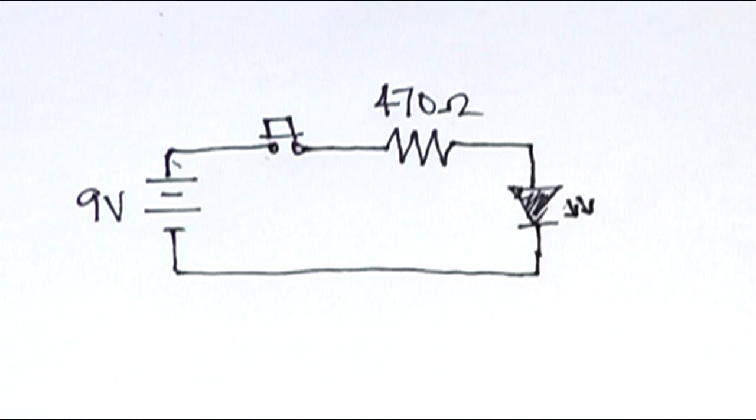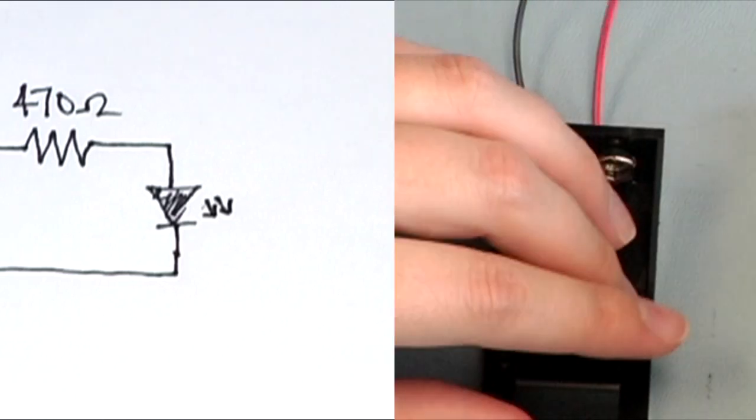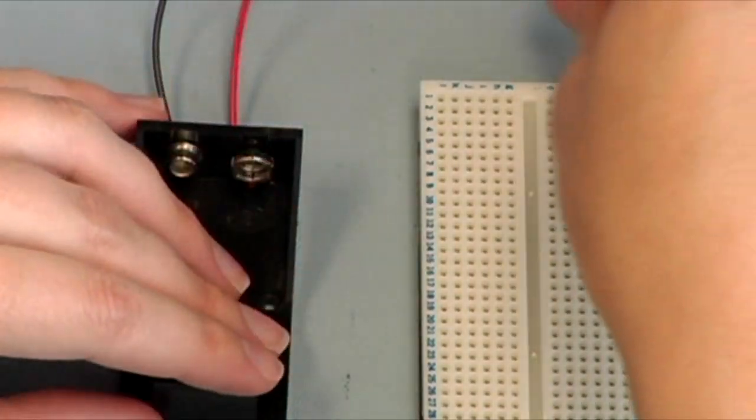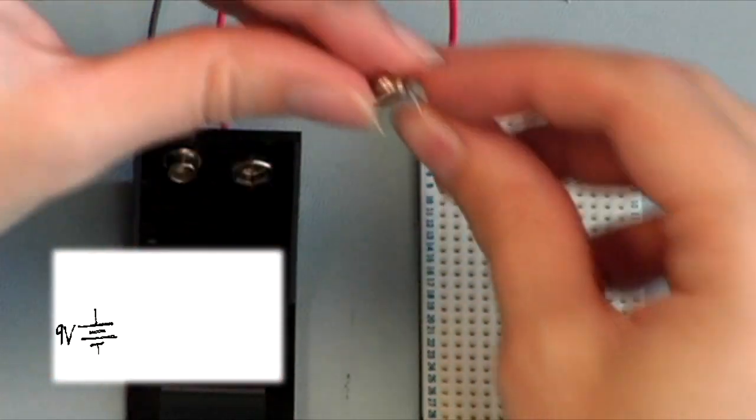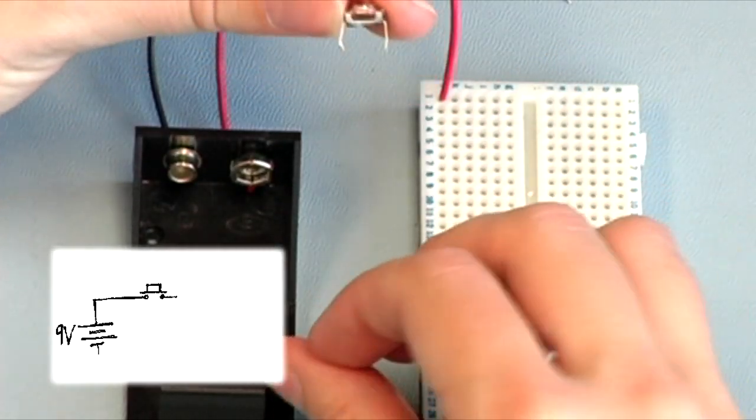So again, let's take a look at how this will be wired on a breadboard. Just like before, let's take each connection one step at a time. So if we begin with the positive terminal of the battery, we see that it's connected to one end of the push button. Now let's stop here and talk about the push button for a minute.